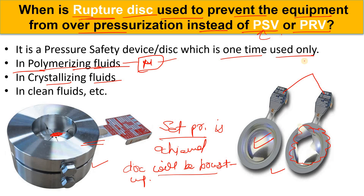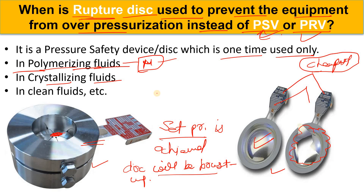Whenever we have to prevent our system from over-pressurization, the rupture disk is the cheapest option available. Only if we cannot use the rupture disk do we go for the PSV or PRV. These rupture disks are designed at a specific pressure so that when that pressure is achieved, the disk bursts. They are also calibrated and tested before use.